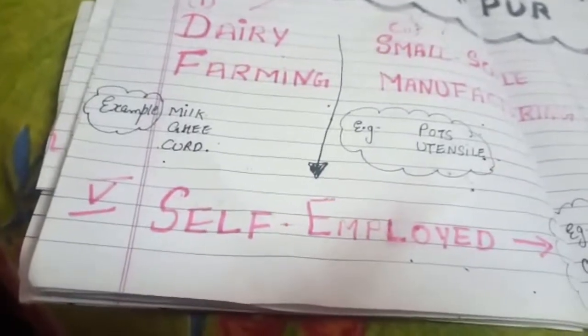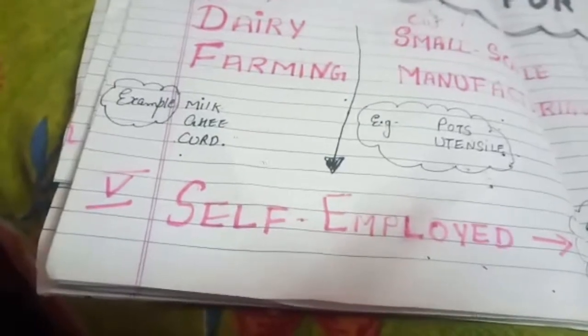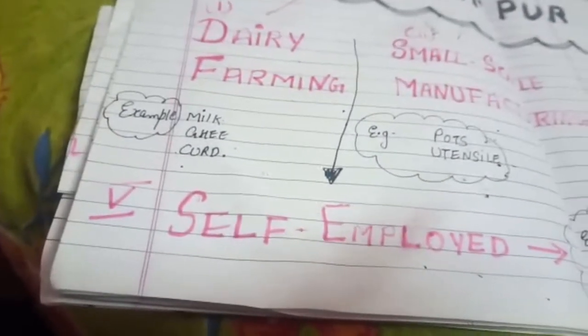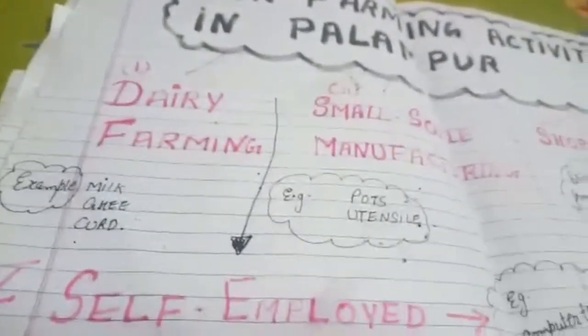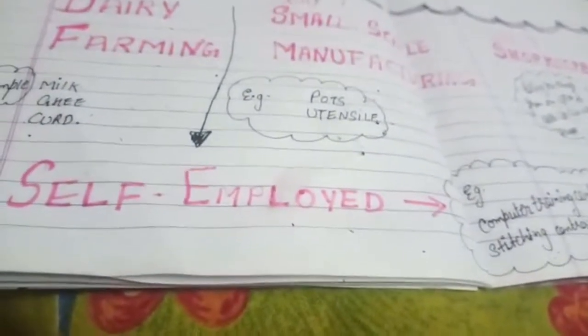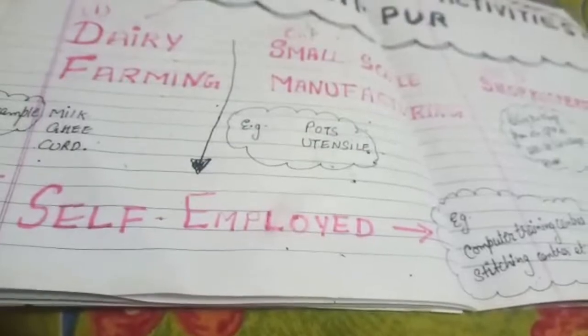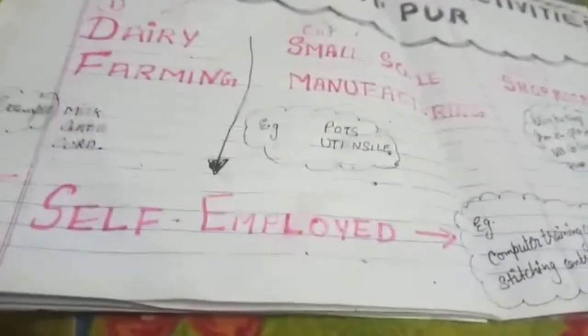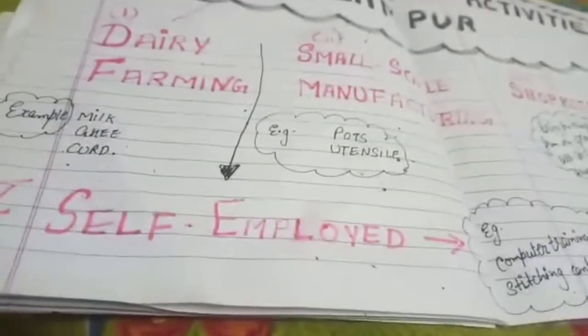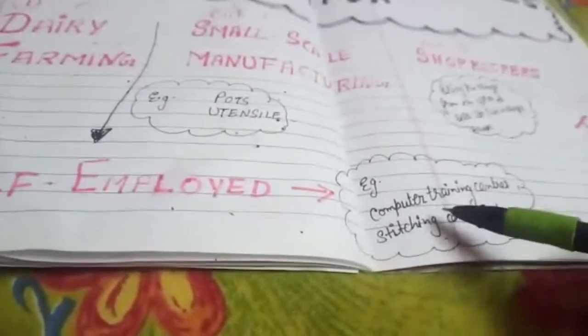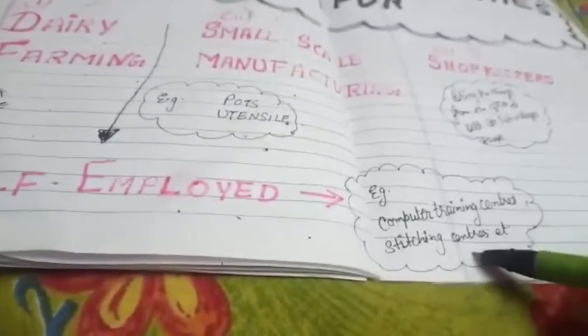Self-employment: some people have opened many centers to obtain more profits and to train more people for better opportunities in life. A computer training center is considered very important for the village because it generates employment for educated people. Without computer education, people remain uneducated. It employs skilled persons in the village to teach, so that they do not have to go to other cities and towns in search of employment. Examples of self-employment include opening computer training centers and stitching centers.